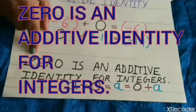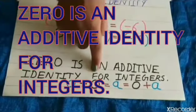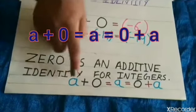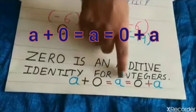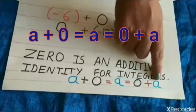Okay? So, we can say 0 is an additive identity for integers. In general, we can say A plus 0 is equal to A is equal to 0 plus A.